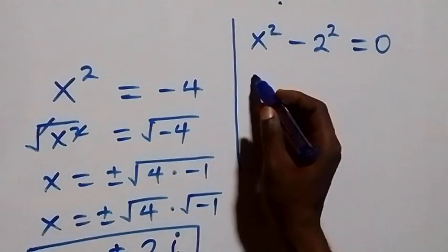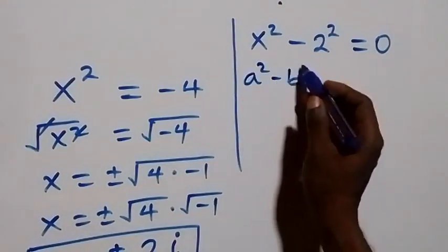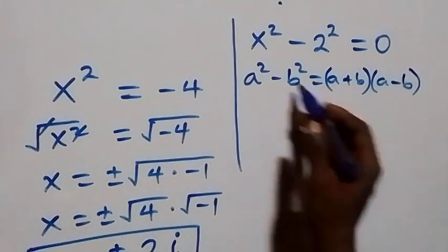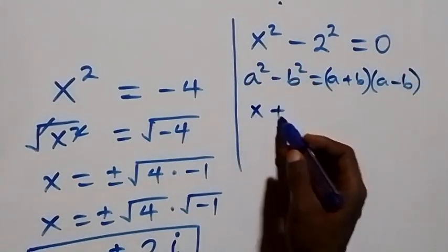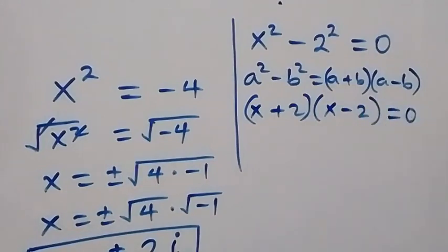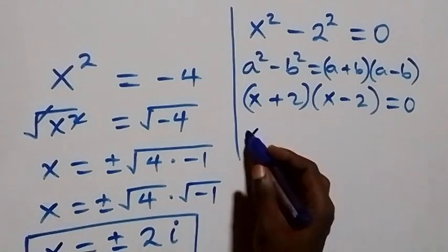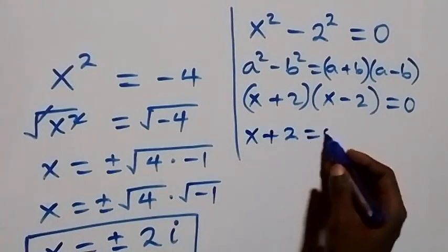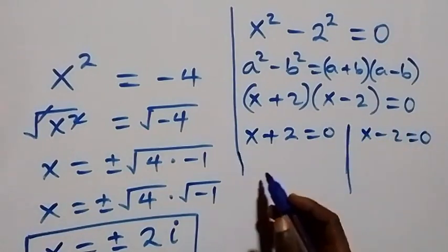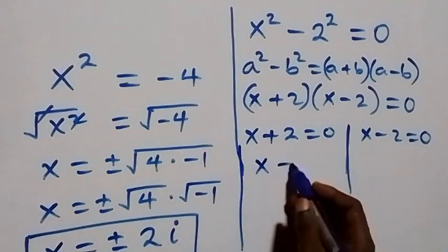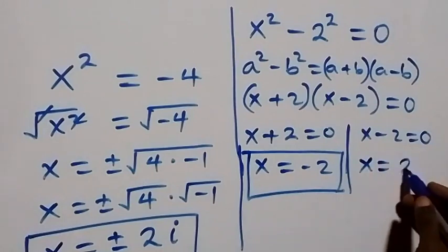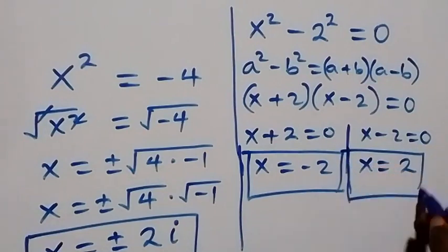For the second factor, x squared minus two squared also follows from a squared minus b squared equals (a plus b)(a minus b), giving us (x plus 2)(x minus 2) equals zero. This implies either x plus 2 equals 0, giving x equals minus 2, or x minus 2 equals 0, giving x equals 2 — both real solutions.